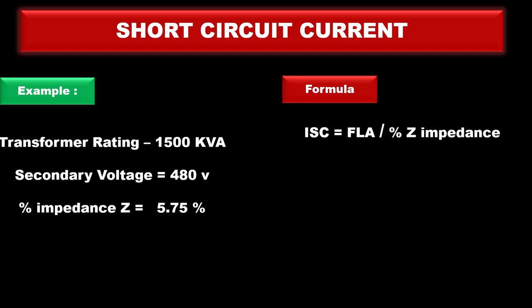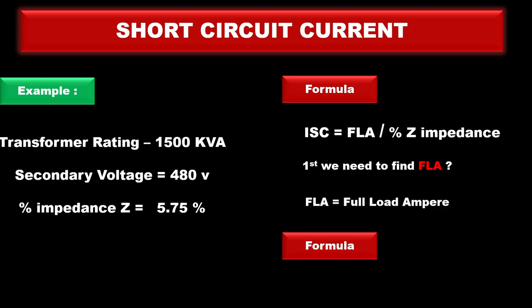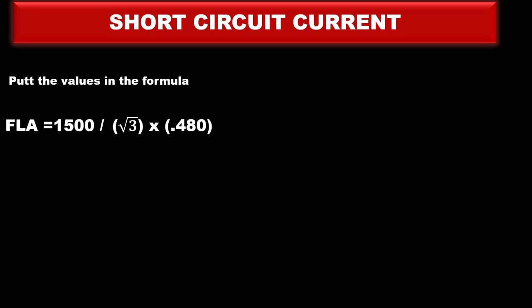First we find full load ampere. The formula for full load ampere is kVA divided by square root of 3 multiplied by voltage. So put the values in this formula: 1500 kVA divided by square root 3 multiplied by voltage. Voltage is 0.480, so the answer is full load ampere equals 1804 amperes.